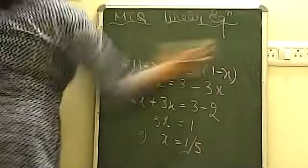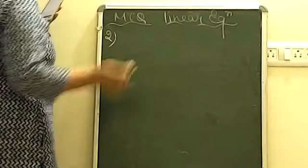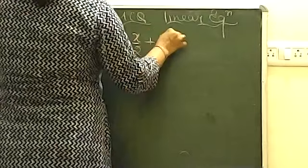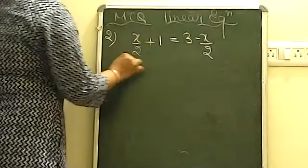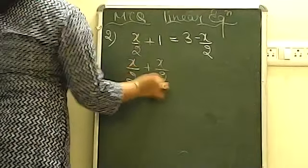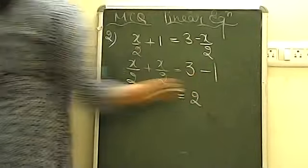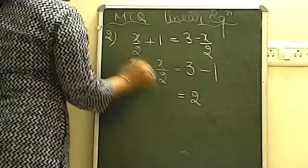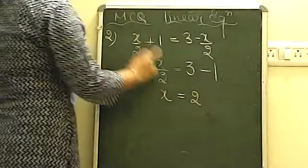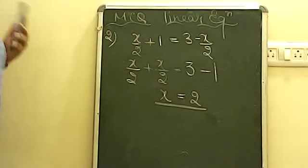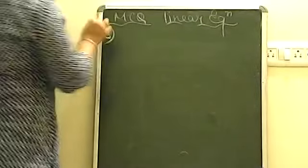Now let's discuss question number 2. Please note down all these MCQ questions in your fair copy as they are all important. The next question is: x/2 + 1 = 3 - x/2. We need to find x. Bringing x terms to one side: x/2 + x/2 = 3 - 1. Since half plus half makes one full x, we get x = 2.